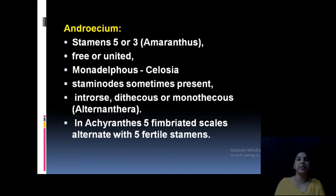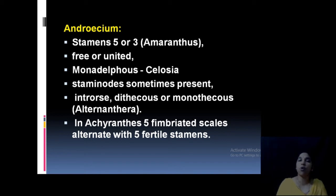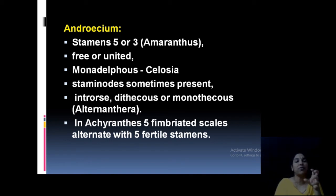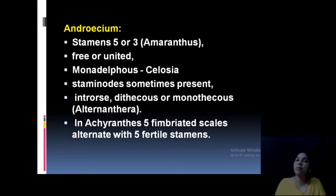Typically there are five stamens, though Amaranthus has three tepals and only three stamens. Stamens may be free or united (monadelphous) — Celosia is monadelphous. Staminodes are usually present. Anthers may be dithecous or monothecous. In Achyranthes, five imbricated scales alternate with the fertile stamens — scales are a typical feature of this group.